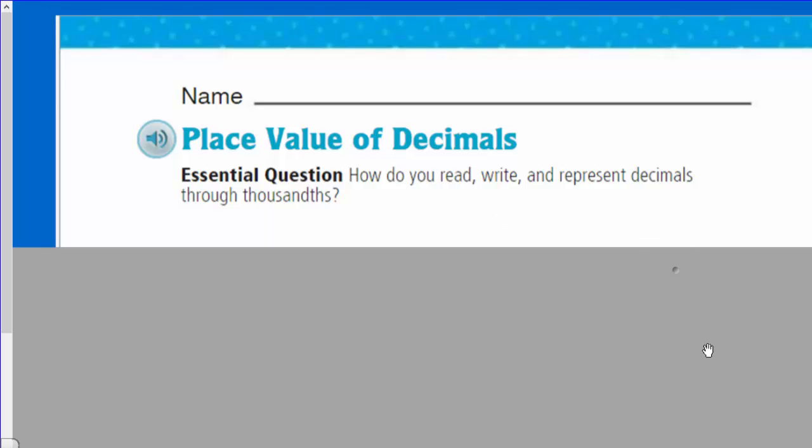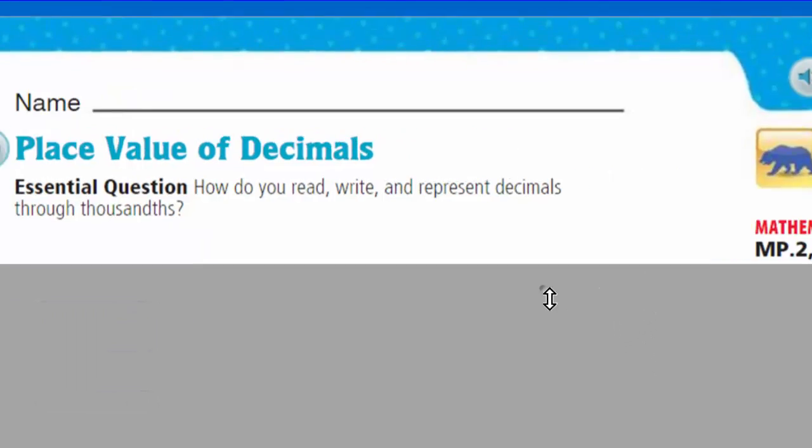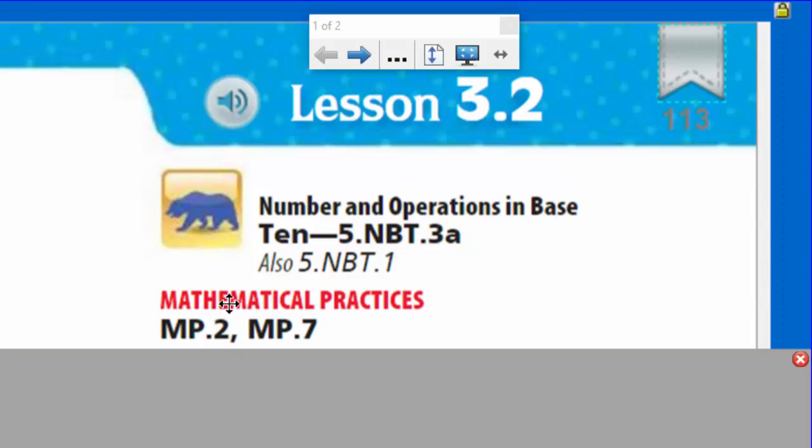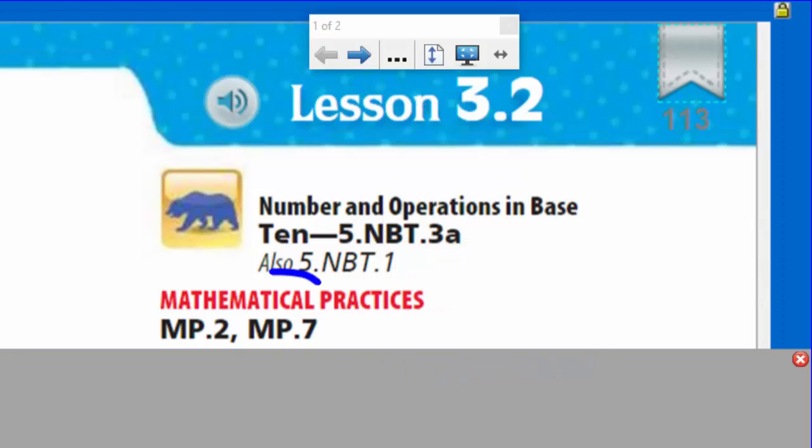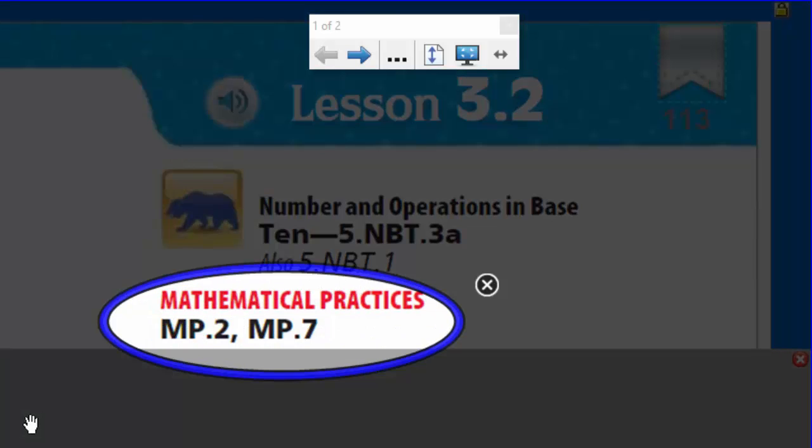It's entitled Place Value of Decimals. Let's take a look at our essential question. How do you read, write, and represent decimals through thousands? I don't know. That's a great question, though. Hopefully through this lesson we'll be able to say yes, we do know. We're going to be looking at two mathematical practices here. You can see them listed at the top of your page. It is going to be mathematical practice number two and number seven.